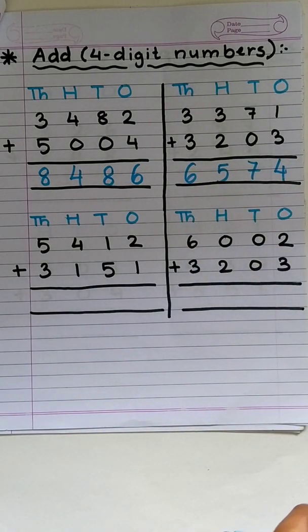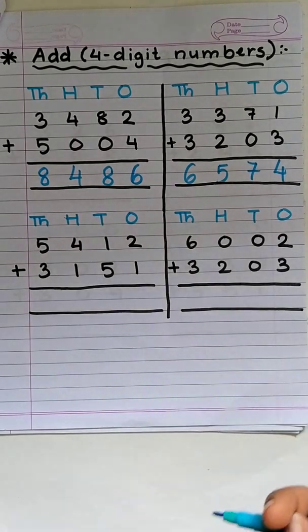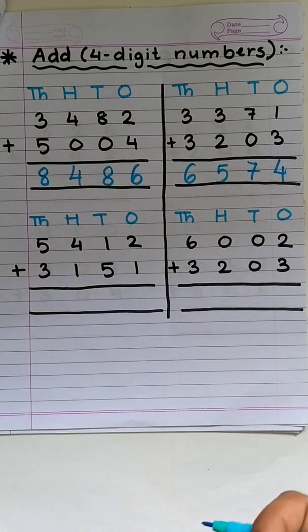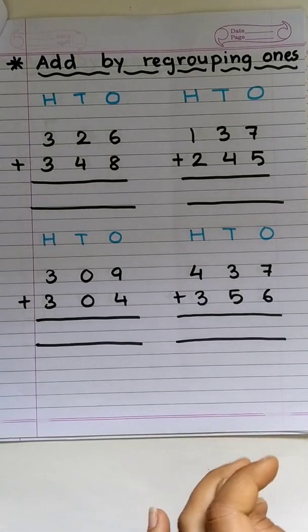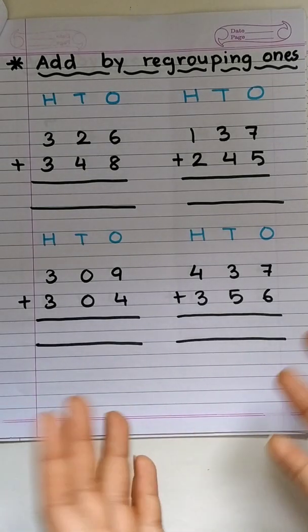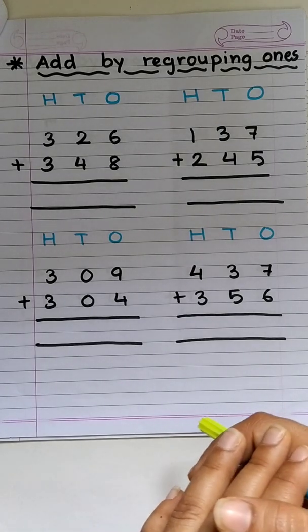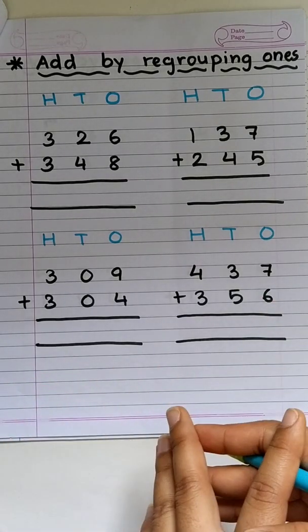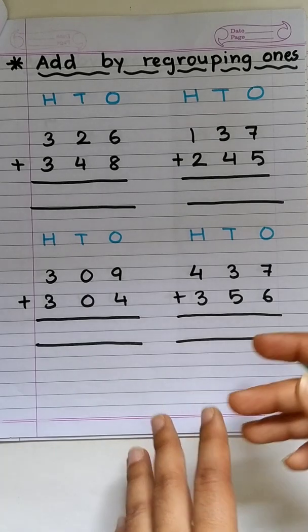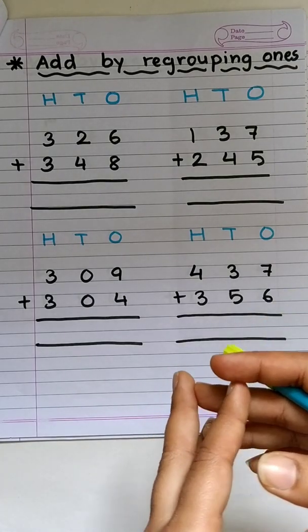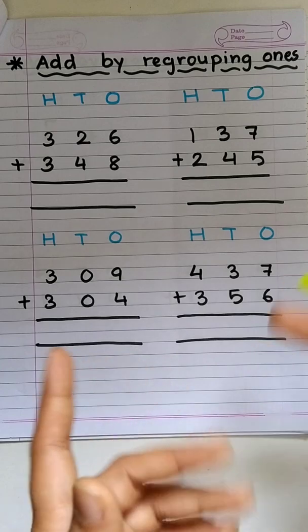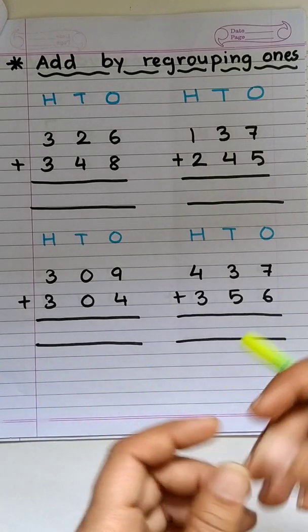Perfect. Now, I want you to try solving these two on your own. Adding 4 digit numbers was quite simple, right? Exactly. Now, it's time that we learn how to add by regrouping. Now, what does regrouping means? We'll learn.